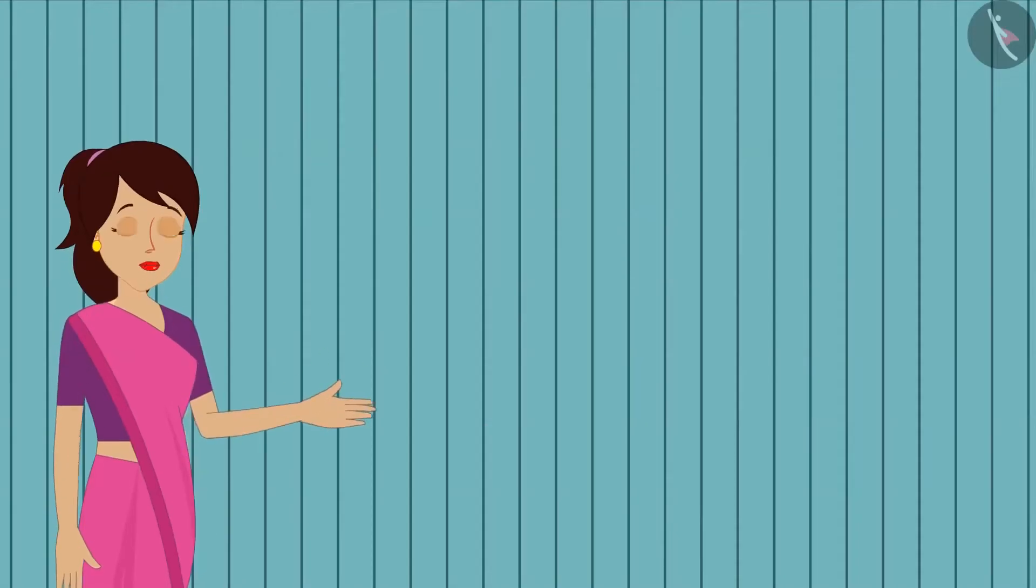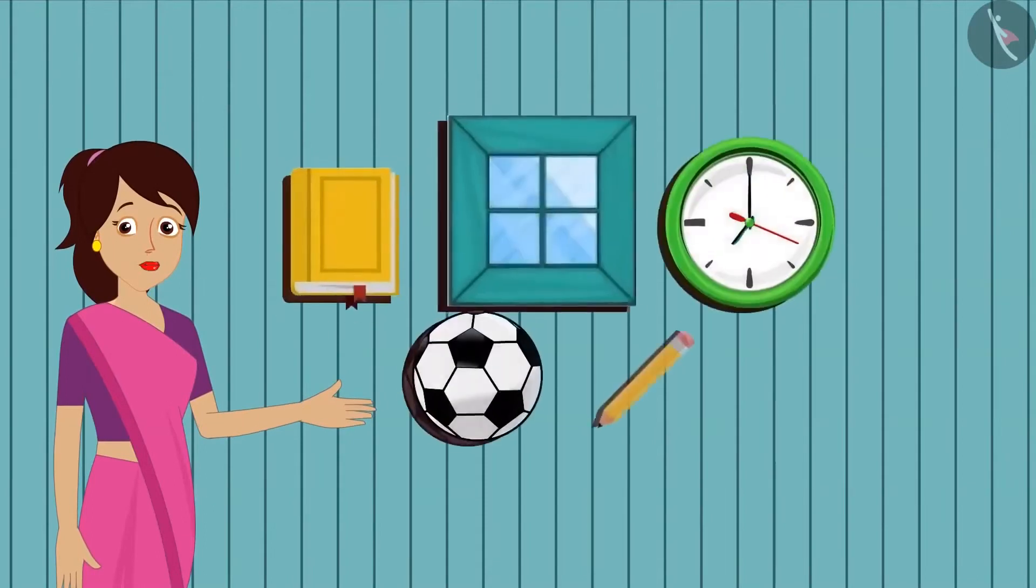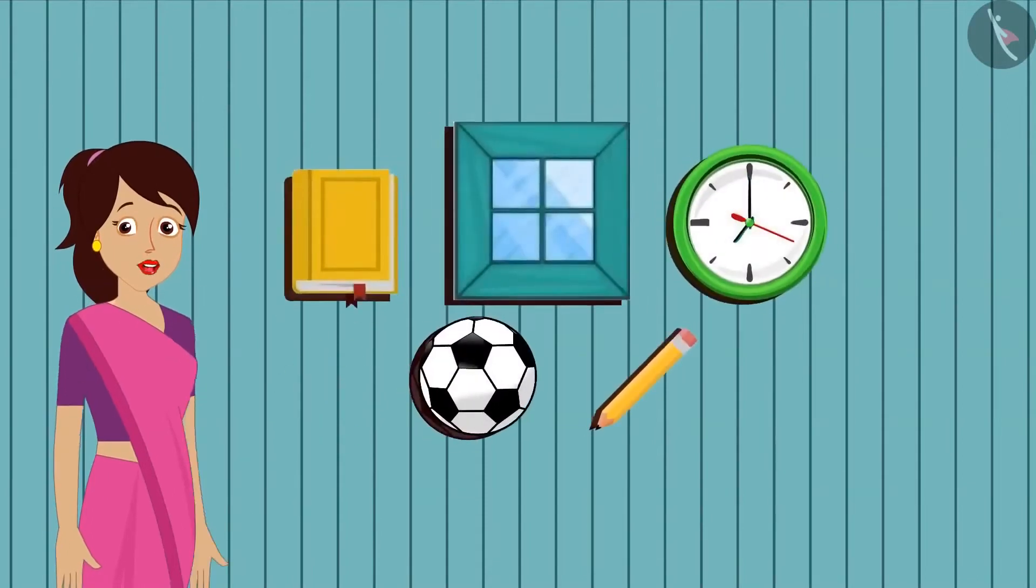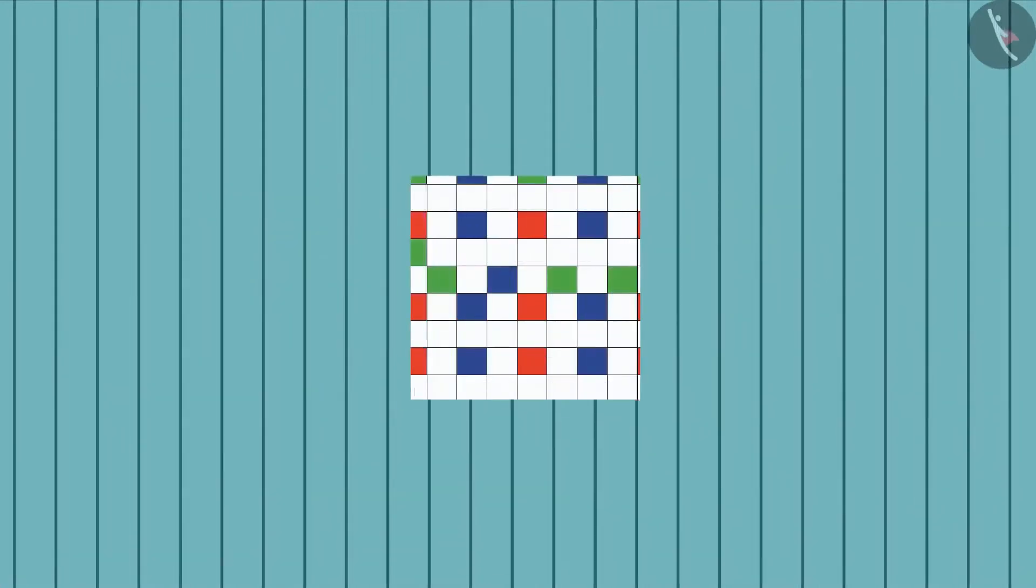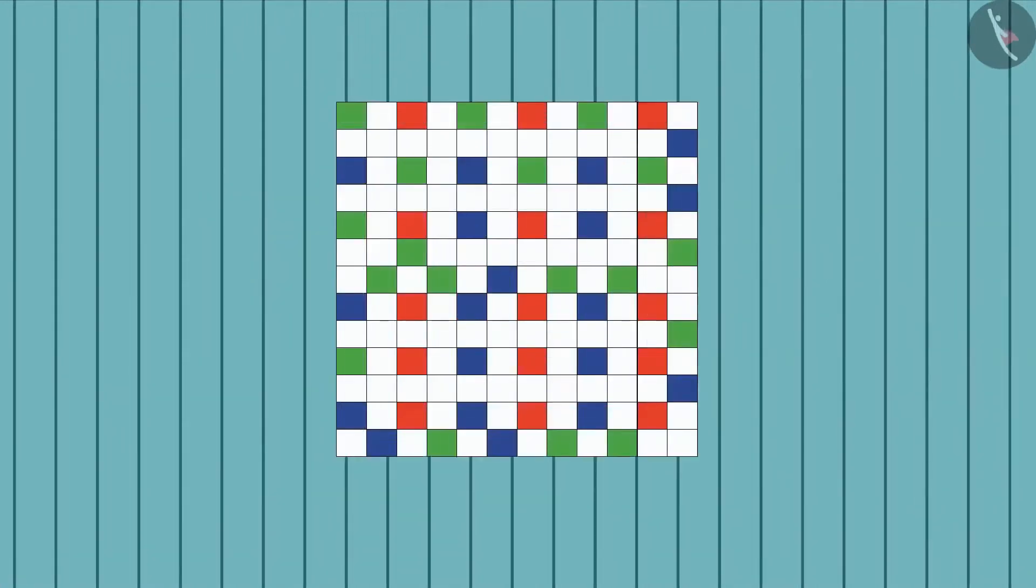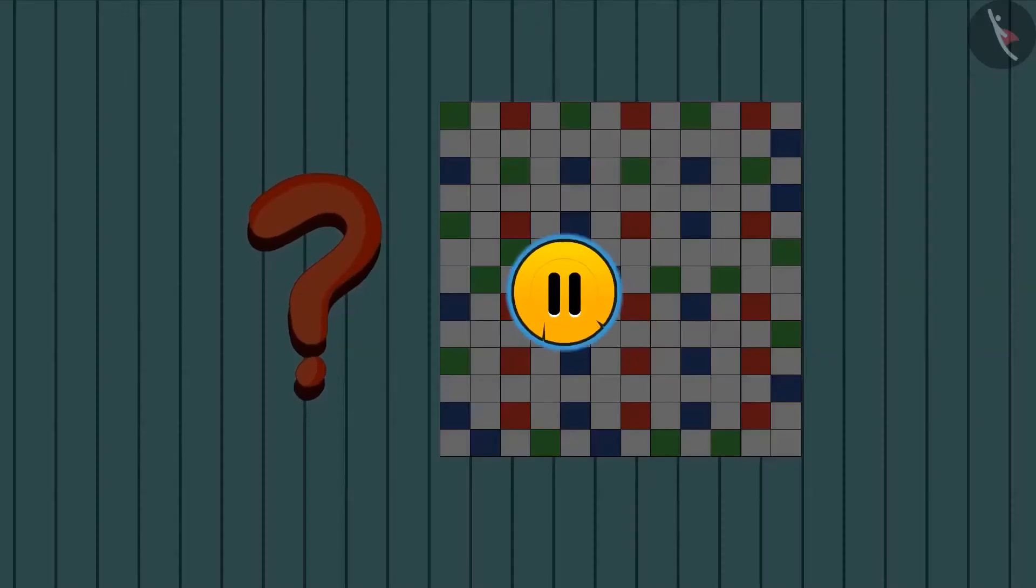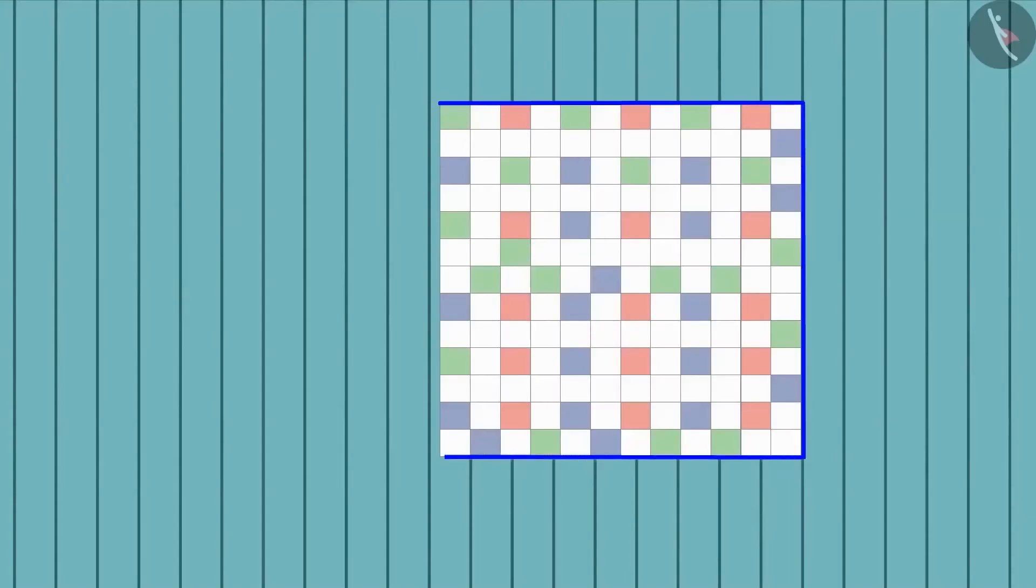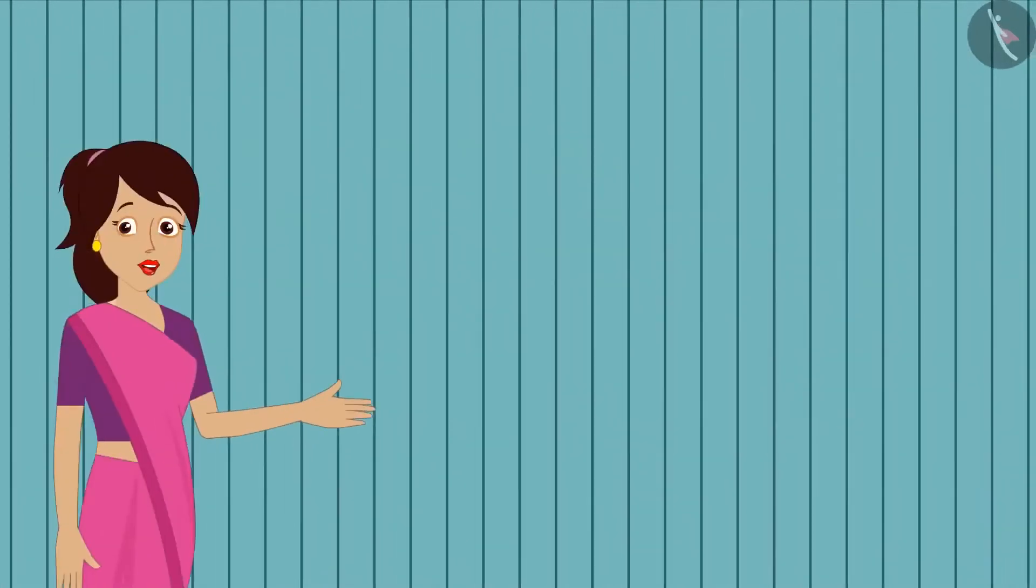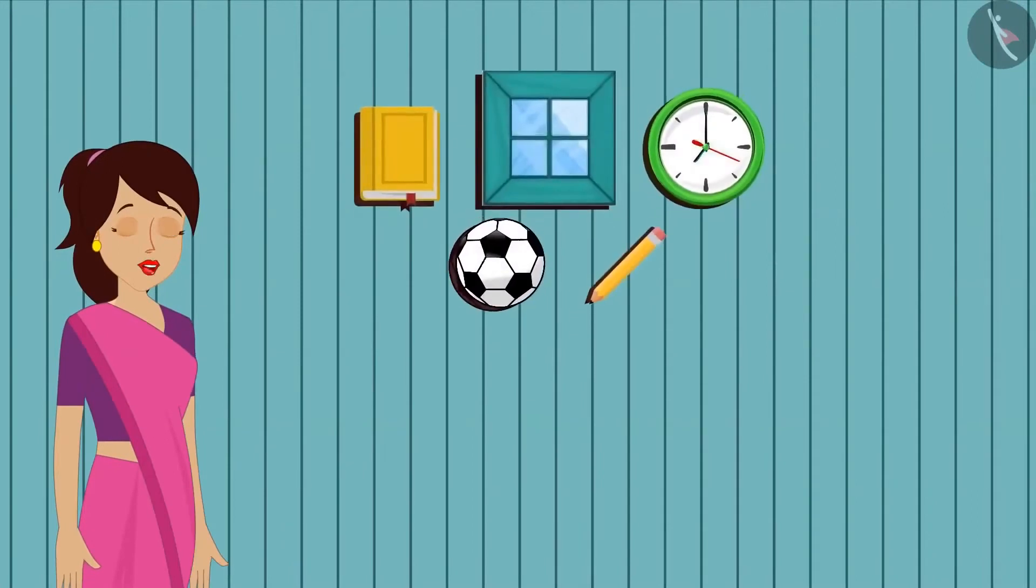Shapes! Hello children, today we will learn how to identify the shapes of objects around us. In the fourth grade, you all have learned about making patterns with different shapes. Can you tell me which shape has been used to create this pattern? If you wish, you can pause the video here and think. Yes, you identified it right children, this pattern is made of squares.